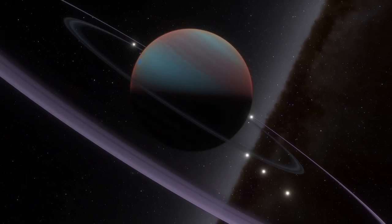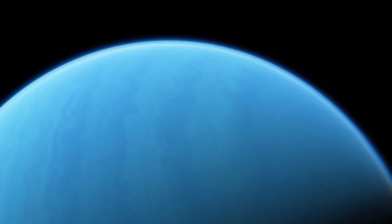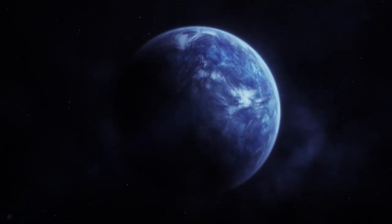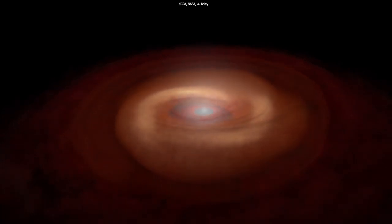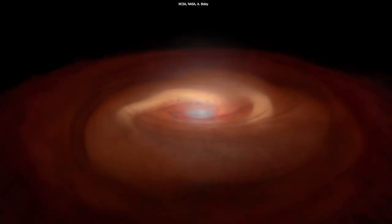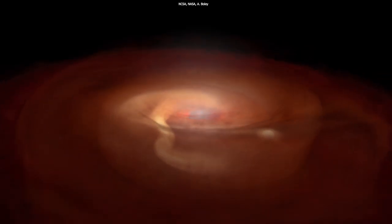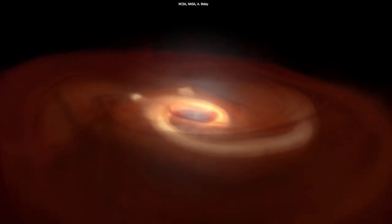The reason why brown dwarfs are sometimes referred to as failed stars is that they're formed like stars but don't have enough mass to ignite nuclear fusion reactions in their cores. A star is formed when the gravitational force pulls gas and dust together, which creates a dense core that eventually becomes hot enough for nuclear fusion reactions to start. This process releases a tremendous amount of energy, which causes the star to shine brightly.